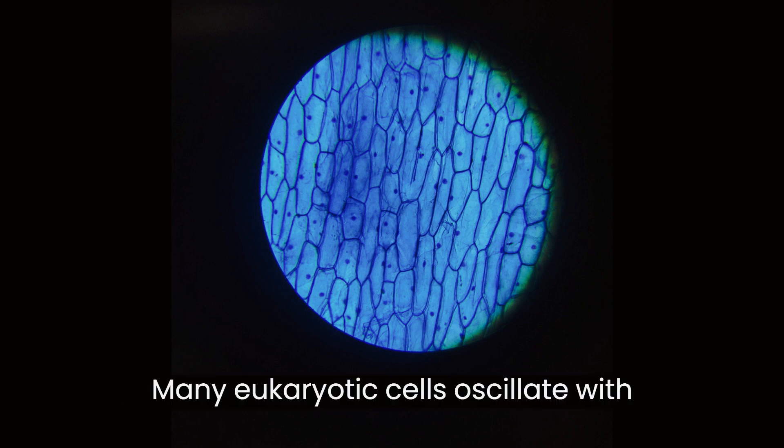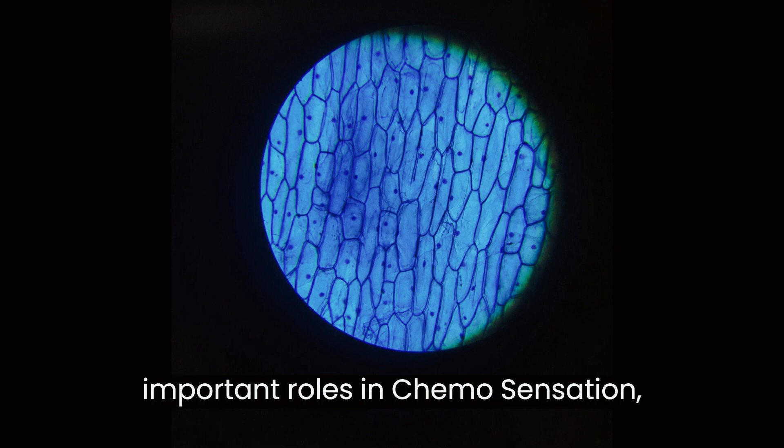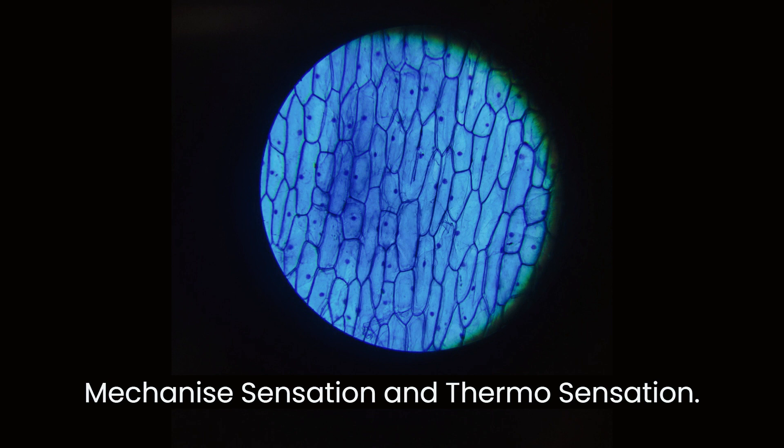Many eukaryotic cells are ciliated with primary cilia. Primary cilia play important roles in chemosensation, mechanosensation, and thermosensation.